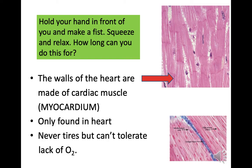The walls of the heart are made of cardiac muscle, which is the myocardium. It's only found in the heart. It never tires but can tolerate a lack of O2 — that's oxygen. So the walls of the heart are made of cardiac muscle, also known as the myocardium.